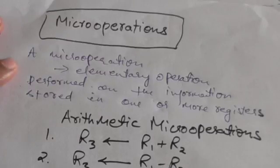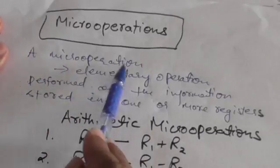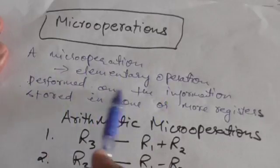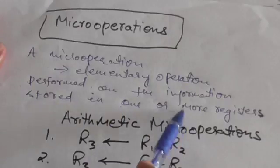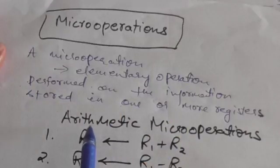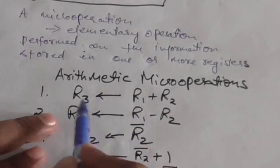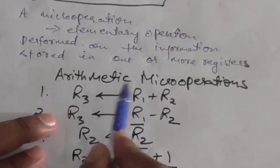Hello friends, welcome back. In this tutorial we will study about arithmetic micro operations. First of all, we must know what a micro operation is. A micro operation is an elementary operation performed on the information stored in one or more registers. So let us start arithmetic micro operations.